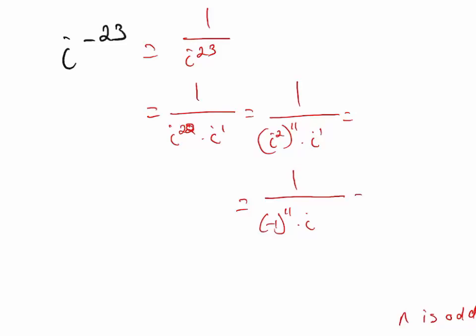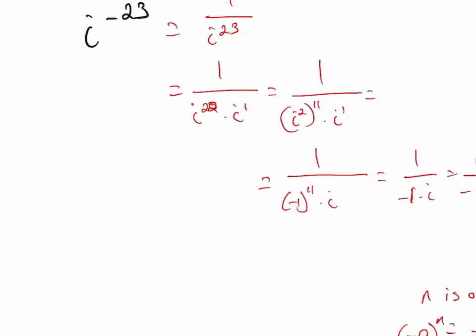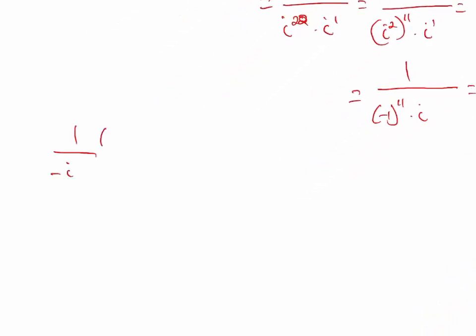And then negative 1 times i is just negative i. But we're not done — I don't want to leave it as a fraction. So I have negative i and I'm going to multiply by the conjugate, which is just i. So 1 times i is i, and negative i times i is negative i squared. Since i squared is negative 1, it becomes i over negative negative 1, which is just i.